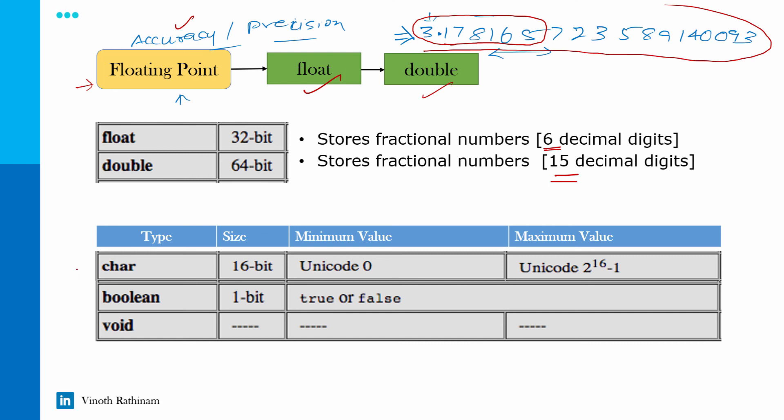Then comes character, it's a single letter which occupies only 16-bit. Then Boolean, it's just one bit, we know true or false. And we have something called void. So it doesn't occupy any space.